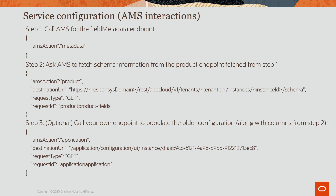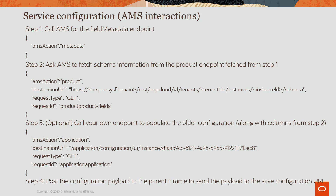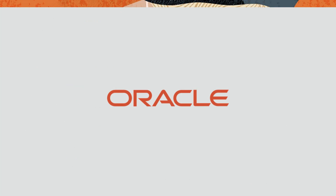The last step is to define how the configuration payload will be sent to the parent iframe. AMS will send the payload to the service's save configuration URL. The app can then send a message to the product to indicate the service configuration is done and the product can resume its process.